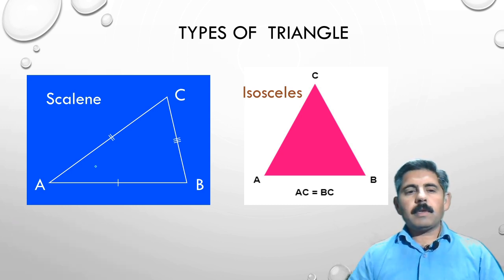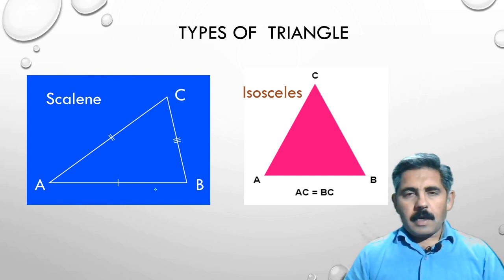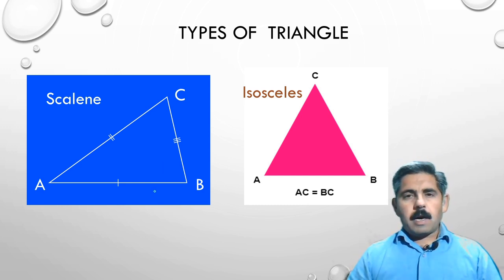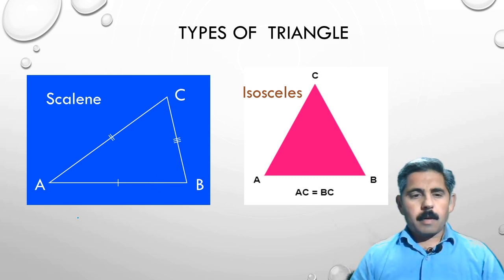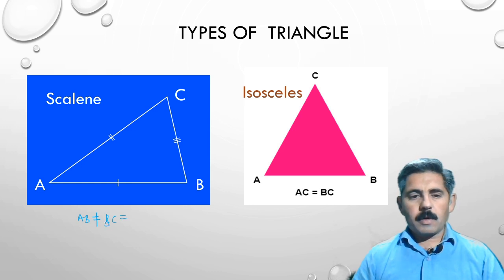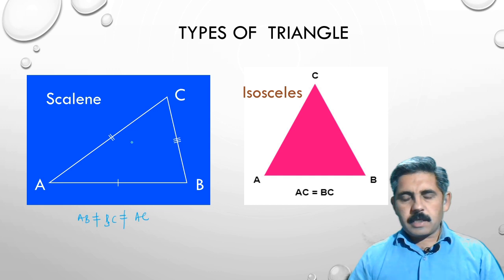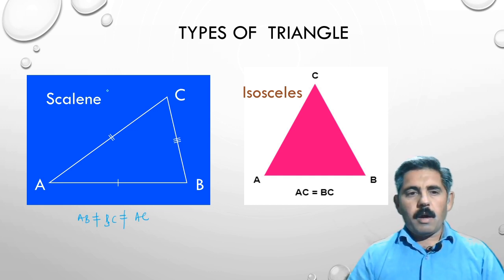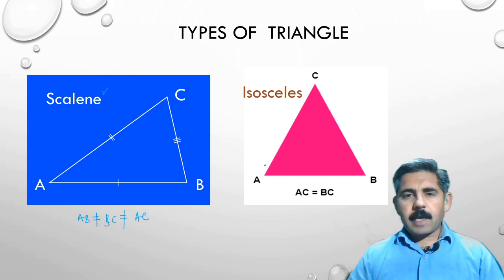The first is the scalene triangle, in which the length of all the sides are different. So a ≠ b, b ≠ c, and a ≠ c. In all 3 sides, the length of each side is different. This kind of triangle is called a scalene triangle.